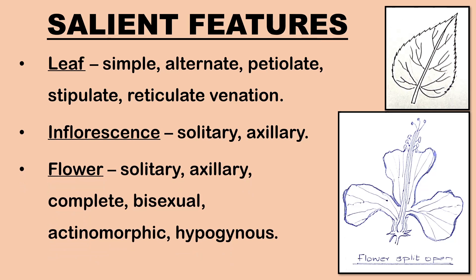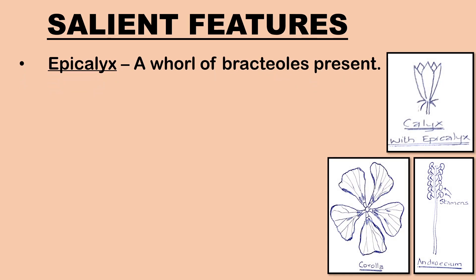Flower: solitary and axillary, on a long peduncle, articulated to the peduncle, large and showy, complete, bisexual, hermaphrodite, actinomorphic, hypogynous. Epicalyx: a whorl of bracts, 5 to 7, present.